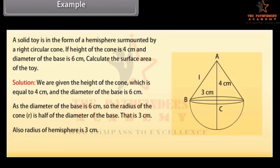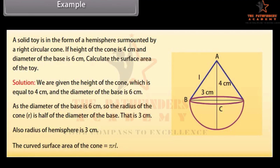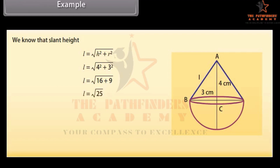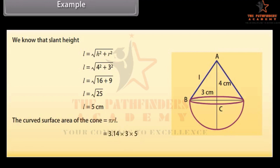To find the surface area of the toy, we need to find the curved surface area of the cone and the hemisphere. The curved surface area of the cone equals pi×R×L, so we need the slant height L. L = √(H² + R²) = √(4² + 3²) = √(16 + 9) = √25 = 5 cm. Substituting the values: 3.14 × 3 × 5 = 47.1 cm².